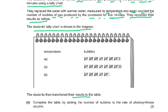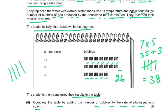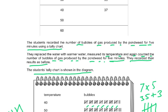The students transferred their results to the table. Complete the table by adding the number of bubbles to the rate of photosynthesis column - that is two marks. Reading the tally chart: each group of five marks equals 5. The first reading is 7 groups of 5 equals 35, plus 3 more equals 38. The second reading is 5 groups of 5 equals 25, plus 1 more equals 26. So the answers are 38 and 26.